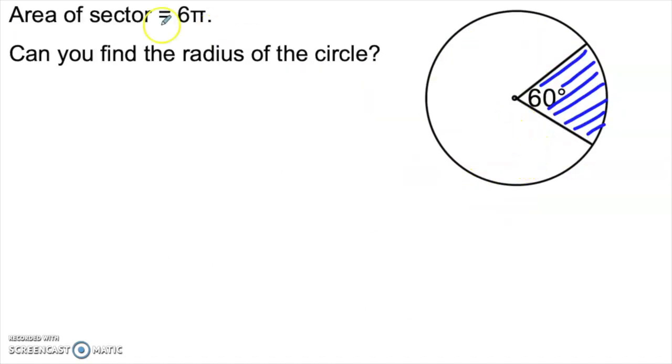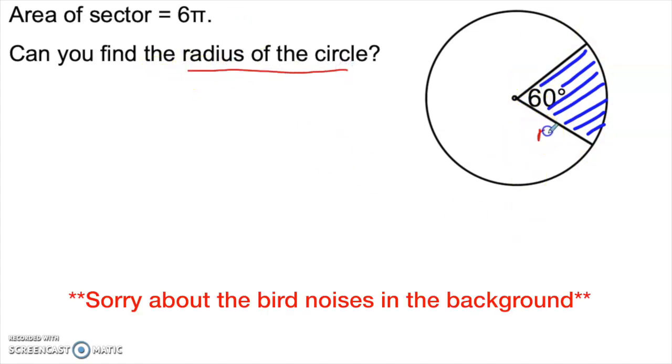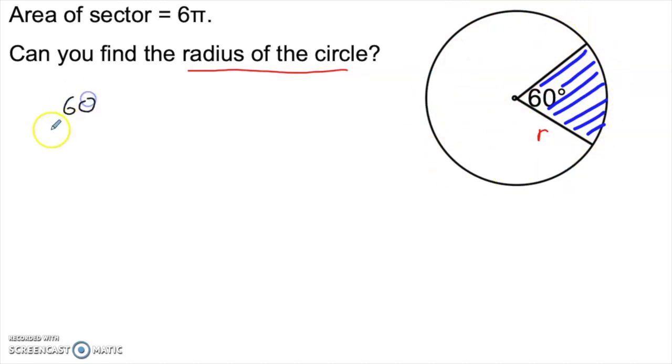Let's say we have a problem where they give us the area of the sector, 6 pi, and they give us the angle at the center of the circle, but they want us to find the radius of the circle. So this time we don't know the radius. Can we solve this? Sure. Same thing. We're still going to think about the ratio of this angle to one full rotation and compare it to the ratio of this area to the entire circle. So 60 degrees divided by 360 degrees, that ratio has to equal 6 pi, the sector, divided by pi r squared, the area of the entire circle. And this time, r is what we're looking to find.